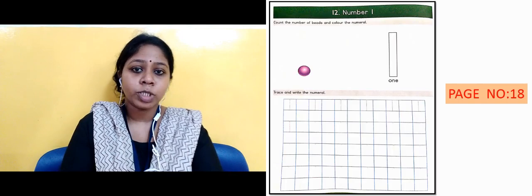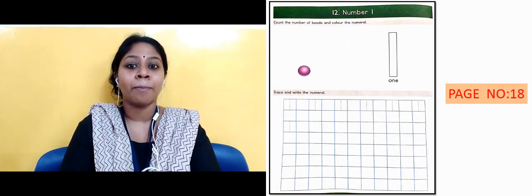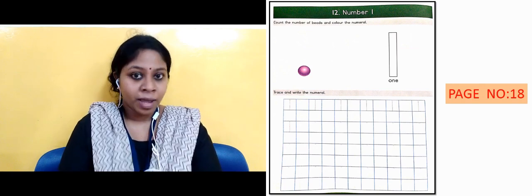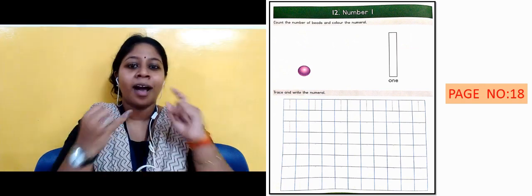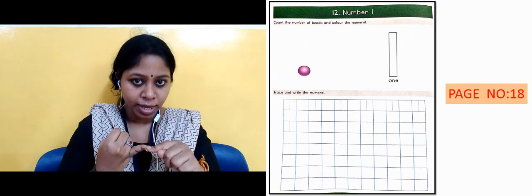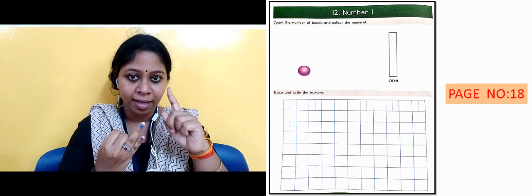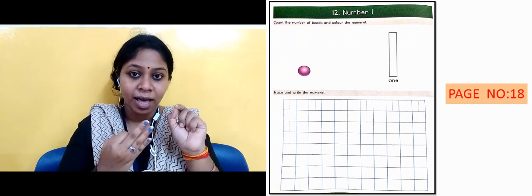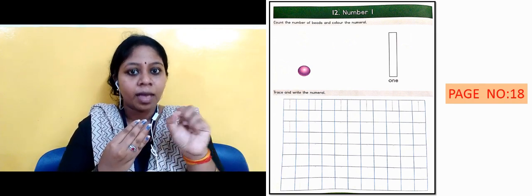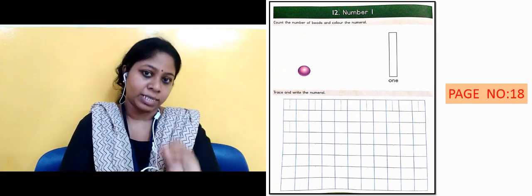The next slide is showing page number 18. What's in it? Which number? It's number 1. And how did we learn it on the board? We learned how to count the beans. We counted the beans. And the number that came, number 1, we colored it. Then we traced it. Then we wrote it. So you will also count at home like this and practice.